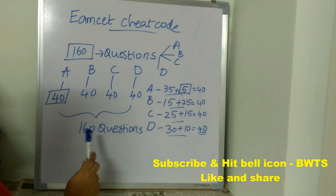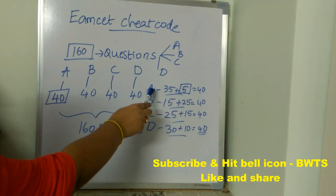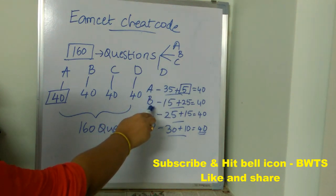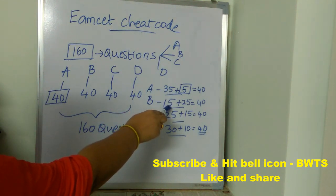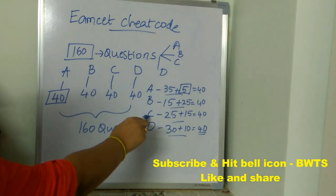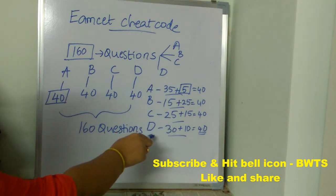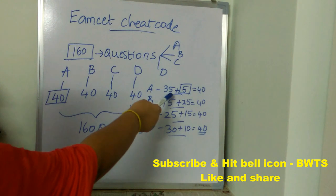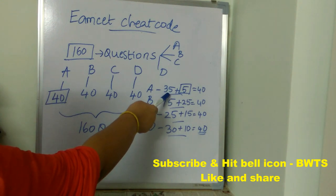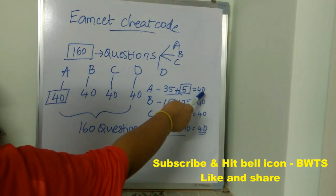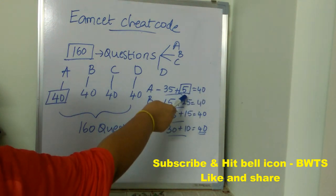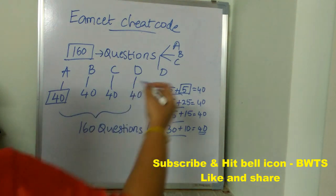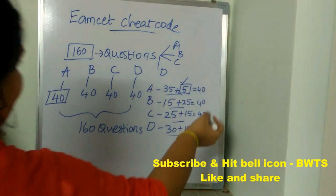For example, if you have selected Option A 35 times, Option B 15 times, Option C 25 times, Option D 30 times — then for Option A, since you've used it 35 times, you can put Option A 5 more times to make it 40.